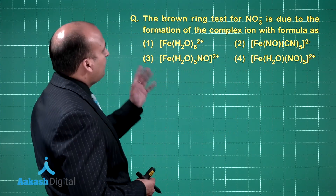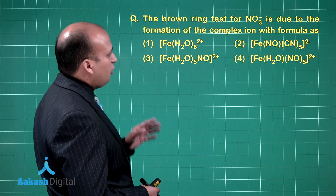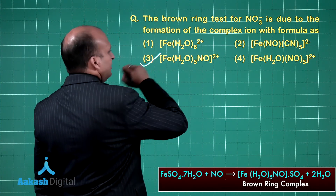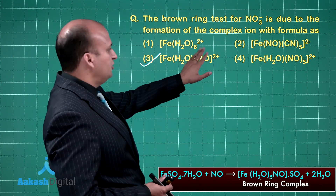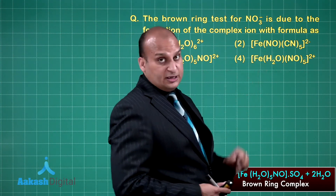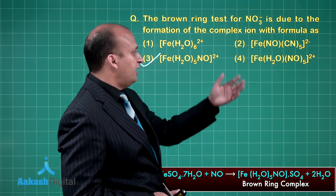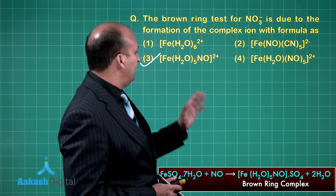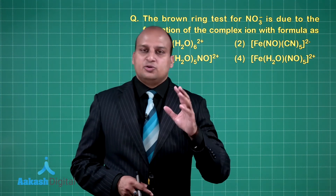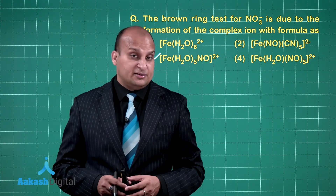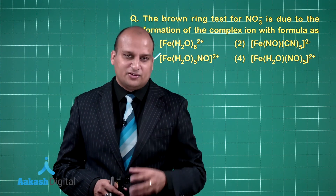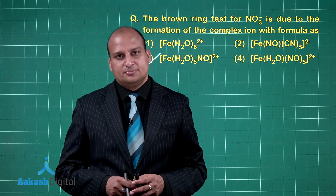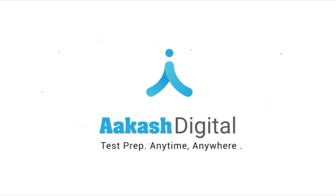The next question: the brown ring test for nitrate ion is due to the formation of a complex ion — the right answer is choice number 3. Choice 1 is eliminated because NO must be present; choice 2 because H2O should be there and cyanide is not present; choice 4 because NO5 is not possible. The questions asked are very straightforward, so you can score good marks in less time. In the coming segment, we will be discussing about the basic radicals.